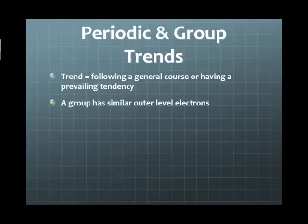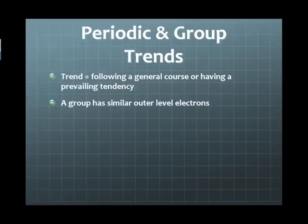Those outer level electrons tend to impart certain properties, and from these properties we can predict particular patterns within the periodic table. Similar elements are therefore clustered together. All the metals are together on the left side, all the metalloids are in the right middle side, and all the nonmetals are on the far right side of the table.